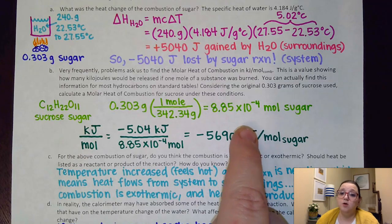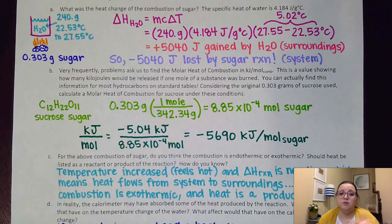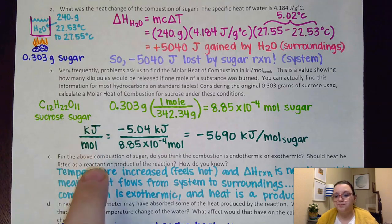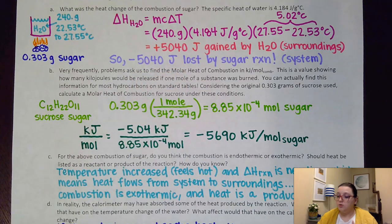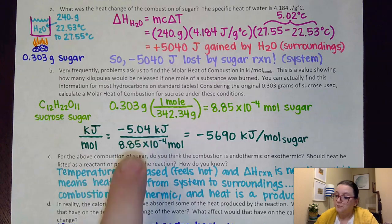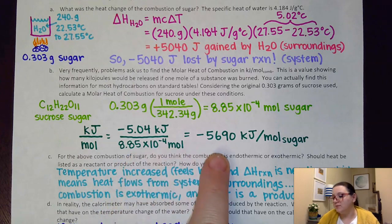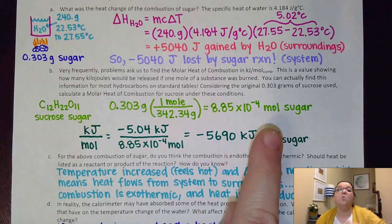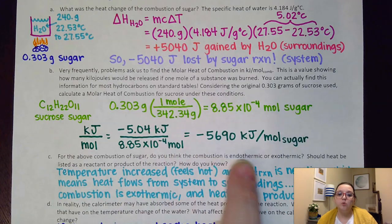Now, that gets a really small number for moles. But that makes sense because I had a really small mass here. I mean, I had basically a third of a gram. So, I'm not going to have very many moles. So, what I did then is I said, okay, if I want kilojoules per mole, I need to take this negative 5040 joules and convert it into kilojoules. So, that's what I did here. I moved my decimal over three places. And so, that gets a negative 5.04 kilojoules. I'm going to divide that by the number of moles of sugar that I had. And what that gets me is that I release a negative 5,690 kilojoules when I burn a whole entire mole of sugar. So, this is my molar heat of combustion.